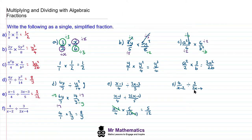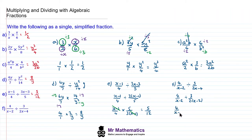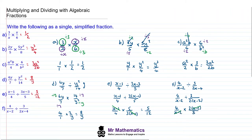For question F, I'm going to factorize the denominator. We have 4 over x minus 2 divided by 3 over 2 lots of x minus 2. We write it as a multiplication: 4 over x minus 2, change the divide to a times, and find the reciprocal of this fraction, which is 2 lots of x minus 2 over 3. Now we can cross-simplify the x minus 2 on the denominator with the one on the numerator. So we have 4 times 2, which is 8, over 3.